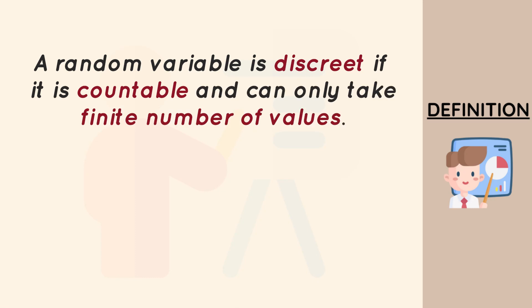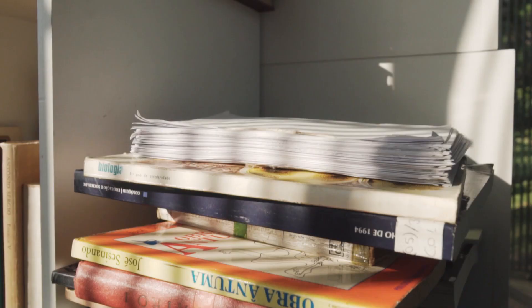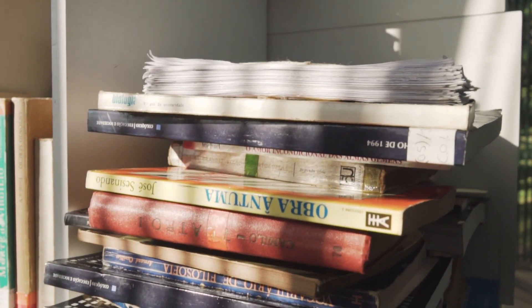A random variable is said to be discrete if it is countable and can take a finite number of values. One important property of a discrete random variable is that it can never take a decimal value, and it must be countable. Examples of discrete random variables include the number of cars in your garage, the number of courses you are taking in a semester, and the number of times you eat in a day.